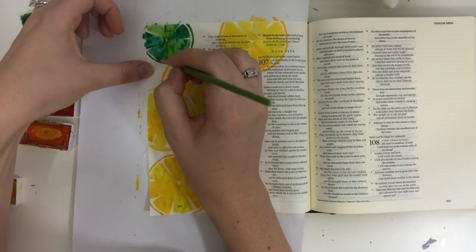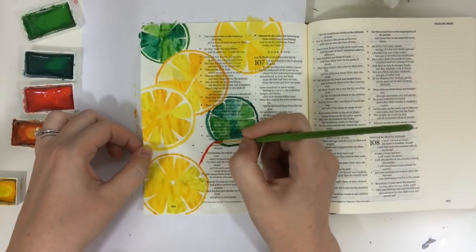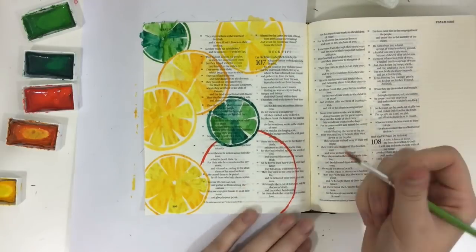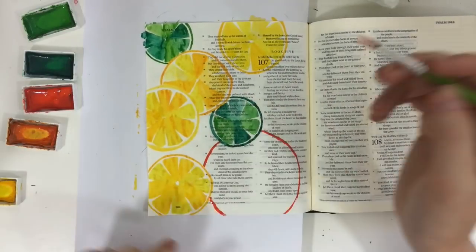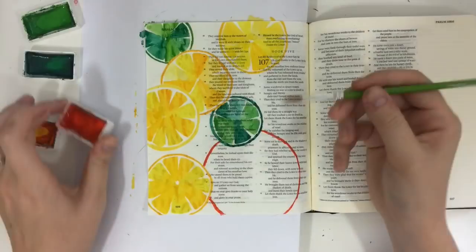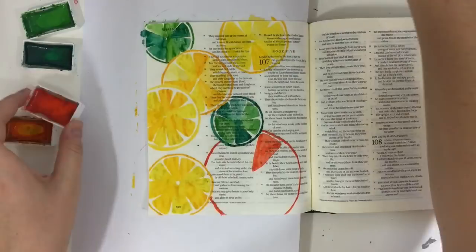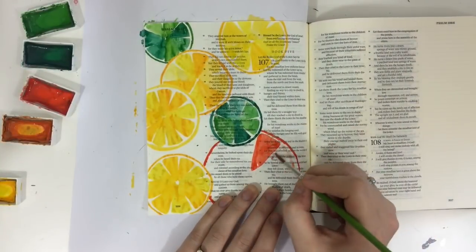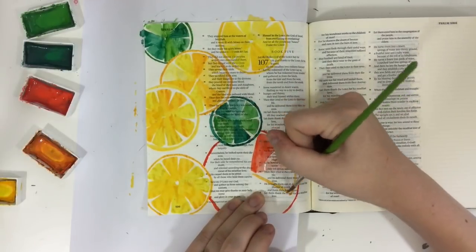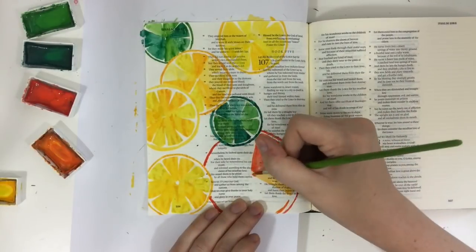Again, I'm using my Kuretake Gansai Tambi watercolors and my size 8 round brush and I will put the link to all of the supplies that I'm using, all of the colors specifically from that set, in the blog post that goes along with this video and you can find some helpful links there as well. That blog post can be found at ScribblingGrace.com slash citrus and I'll also put that link in the description below so be sure to check that out.